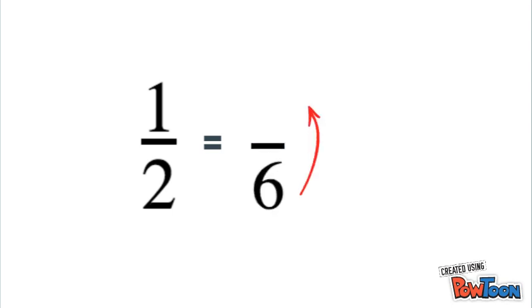What's half of 6? 3. So 3 sixths is equal to 1 half. We could actually make infinite amounts of equivalent fractions to 1 half by simply taking half of any number.